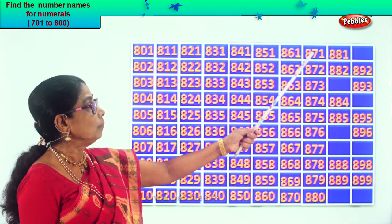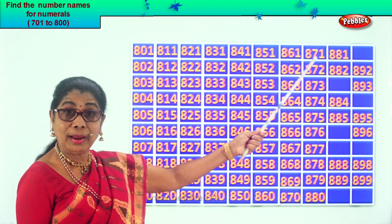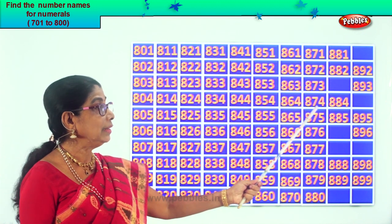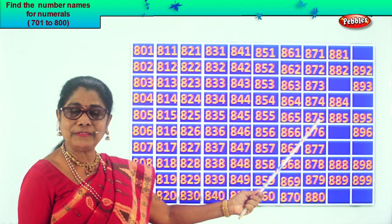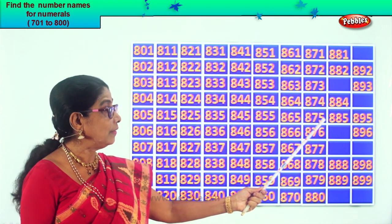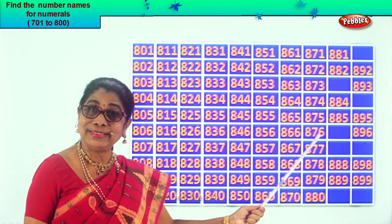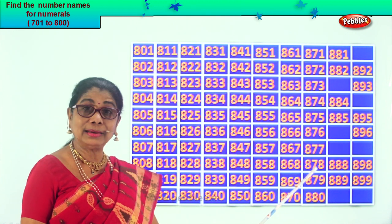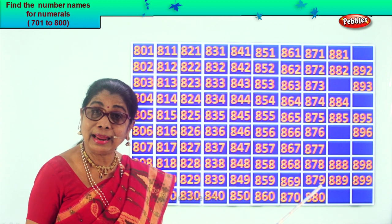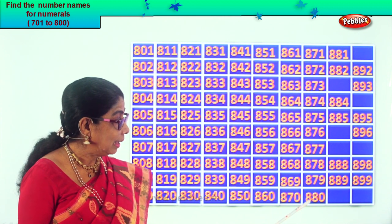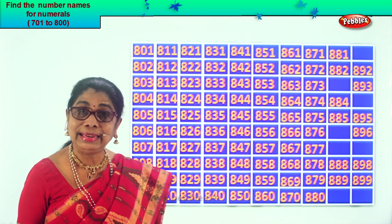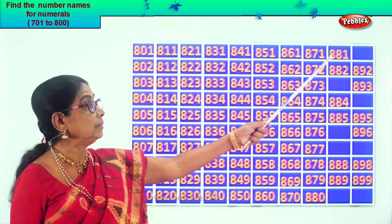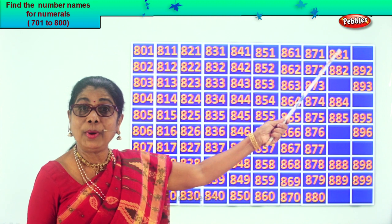871, 872, 873, 874, 875, 876, 877, 878, 879, 880. After 880 comes 881.